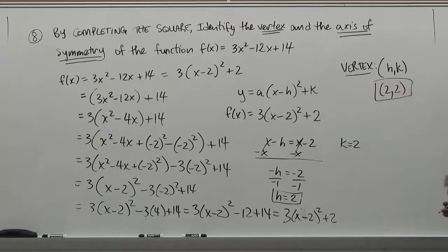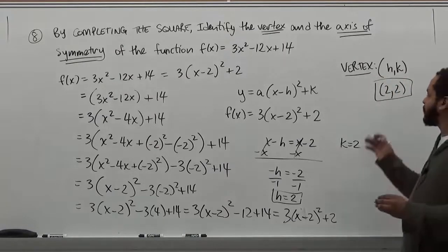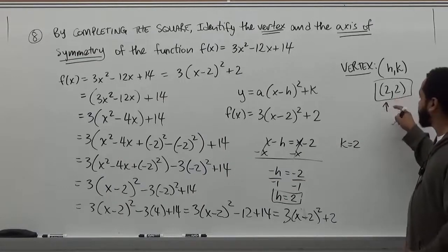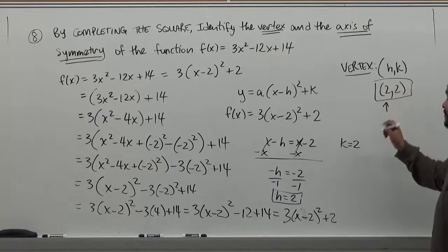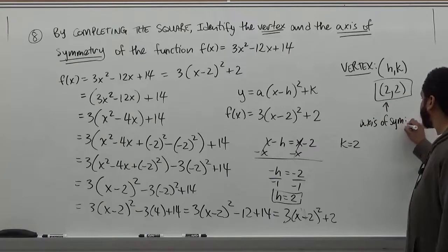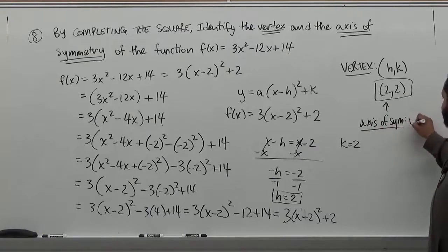And now, as far as our axis of symmetry, this is a really basic component. Once you get here, we know that our axis of symmetry is based on the x value of the vertex. So our axis of symmetry is simply x = 2.